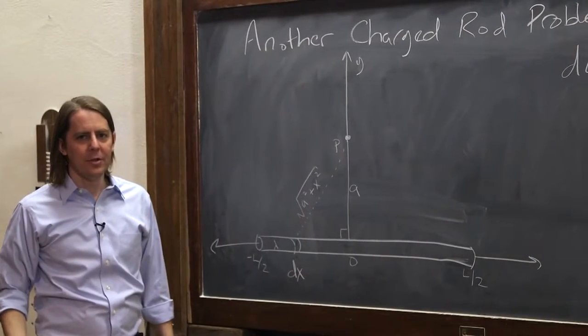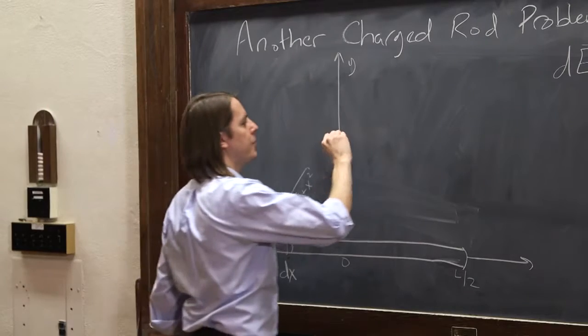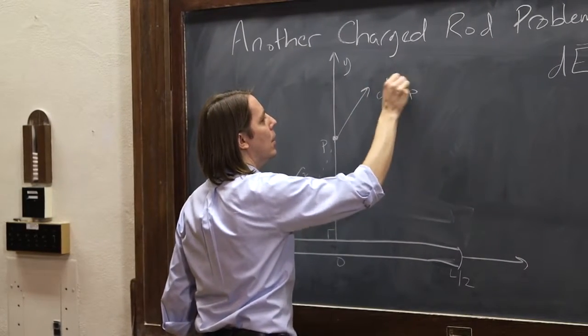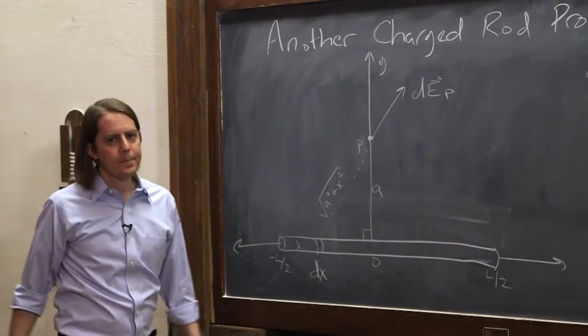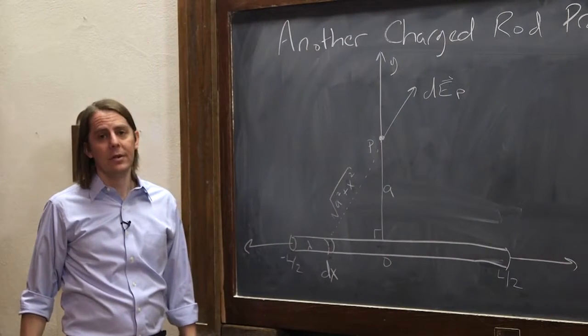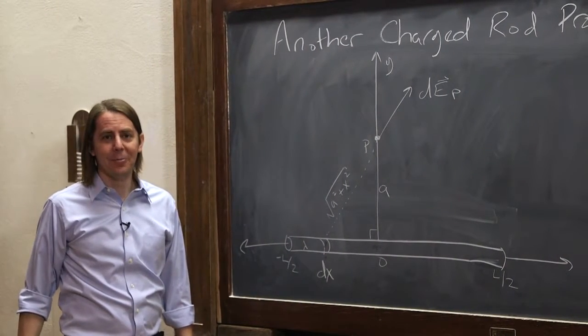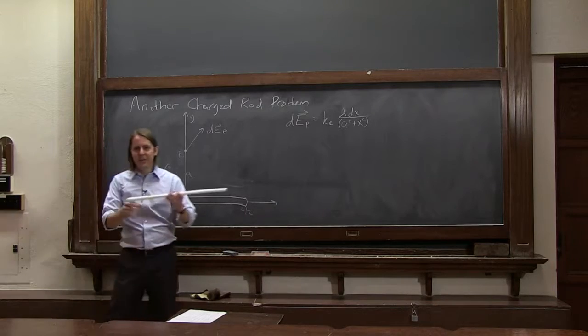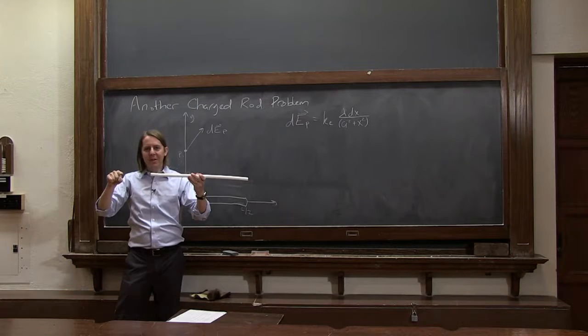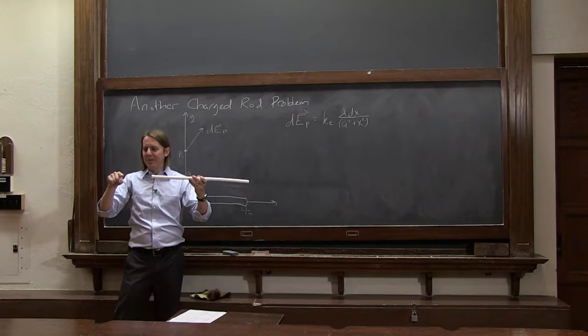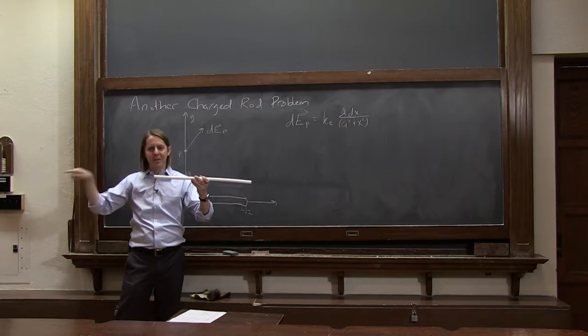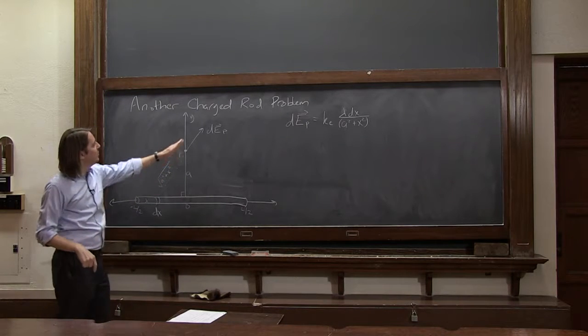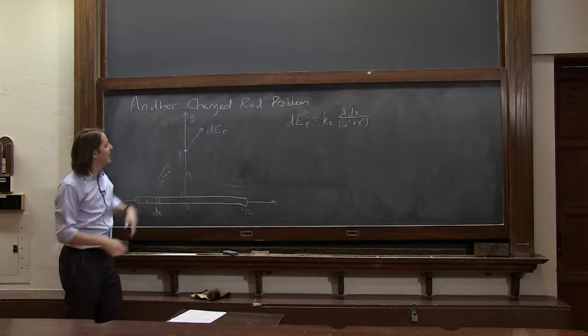That's the magnitude of dEP. We have our magnitude. Now, dEP is a vector, and we're solving a vector problem. So when we were getting the electric field at a point just along the length, everything was in one dimension. To make it a vector, we just slapped on i hat because it was on the x-axis. Now, we have multiple vector components. We have to think about the fact that dEP is at an angle.